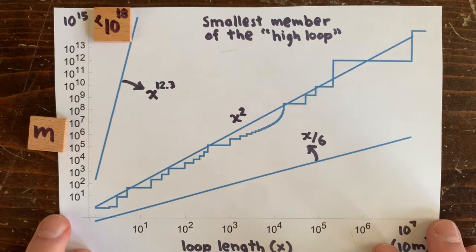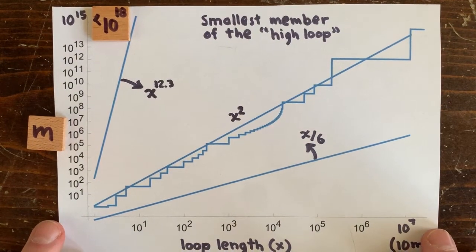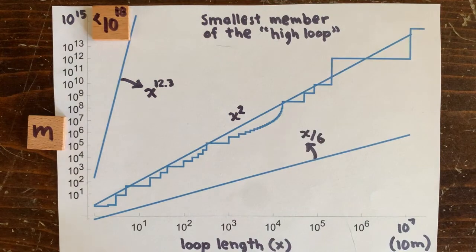That's why any 3n plus 1 loop has to have more than 10 million members. So don't go out there expecting to find a short 3n plus 1 loop.